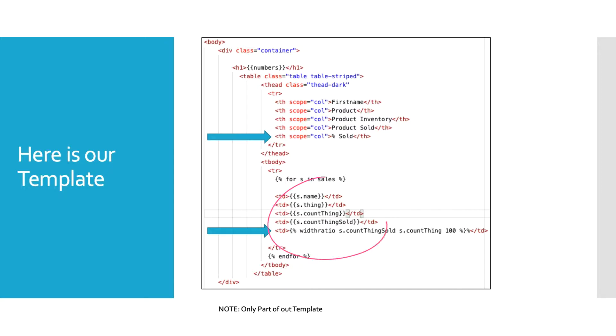Now that last one, percent sold, is the one that we want to create or derive through our template. So if we look down here, where we'll have our values now brought back, when we do our for loop, we see for s, our iterator s in sales. Sales was our query from our view, right? So for s in sales, and then we will bring back the different fields that we want from our database: s.name, s.thing which will be the product, s.countthing will be the number of products we have in inventory, s.countthingsold will be the number of products each salesperson has sold. And then we have this funny looking tag widthratio. What? Then we're using s.countthingsold, s.countthing, and the number 100. So three data elements there, what exactly are we doing?